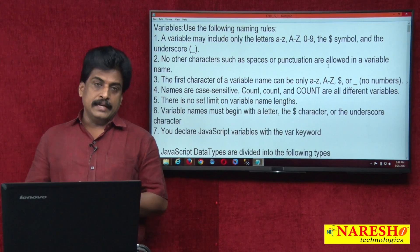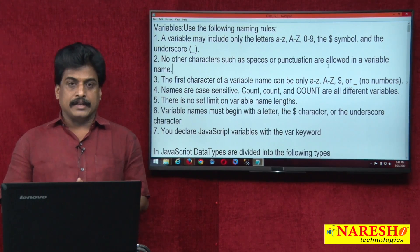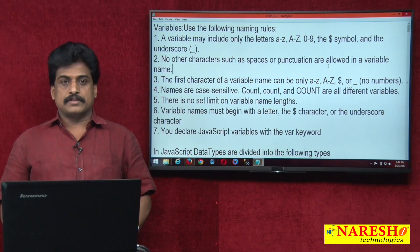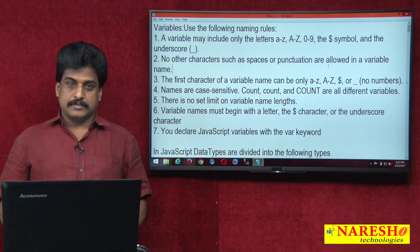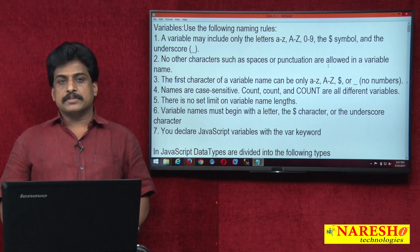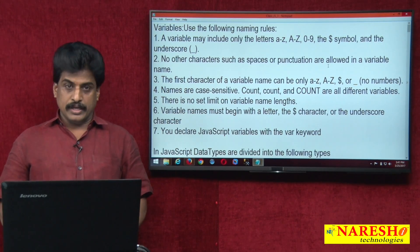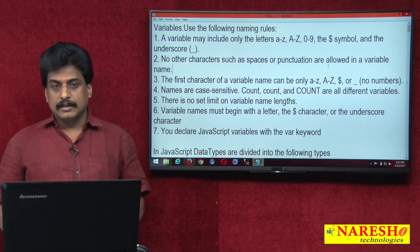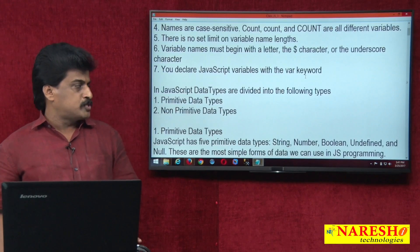Now come to data types. In JavaScript, data types are mainly classified into two types: number one, primitive data types; second, non-primitive data types. Primitive data types are classified into five types: number, string, boolean, undefined, null. Non-primitive data types — there is only one, called object.